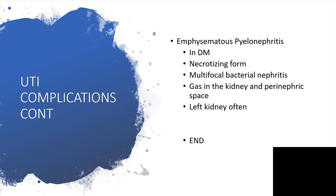One more complication to discuss is emphysematous pyelonephritis — a very serious condition. In that case, there is gas in the kidney and perinephric space, usually affecting the left kidney. It is a multifocal bacterial nephritis, typically a necrotizing form, and is common in diabetes mellitus patients. When someone with diabetes mellitus is having a UTI, we must treat aggressively because they could develop a necrotizing form with multifocal bacterial nephritis and gas in the kidney and perinephric space, particularly on the left side.